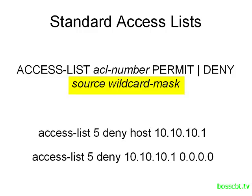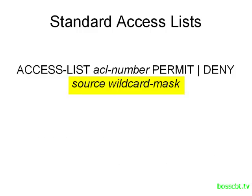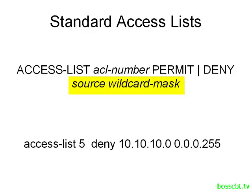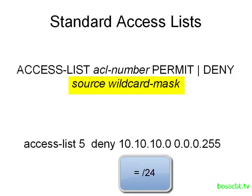The last example is to match a range of IP addresses. For example, 'access-list 5 deny 10.10.10.0 0.0.0.255'. The wildcard mask tells us what particular range of IPs are affected. This wildcard mask equates to a /24 subnet mask, so this line of the access list is going to deny the entire 10.10.10.0/24 subnet. That is the basic structure of a standard access list.